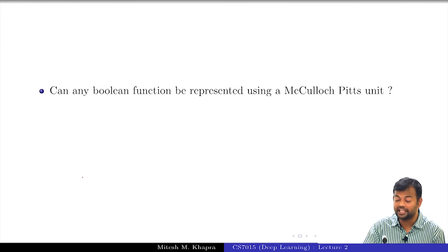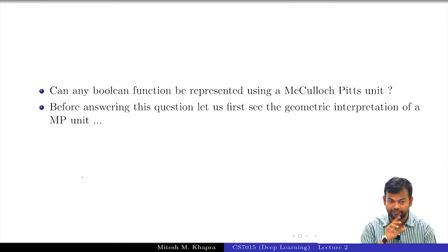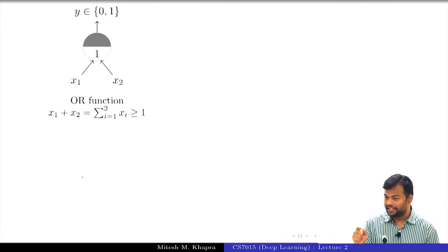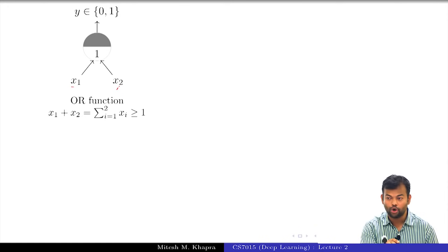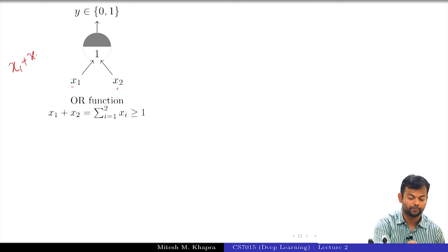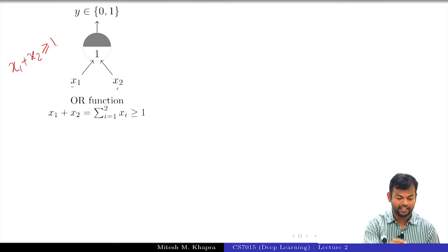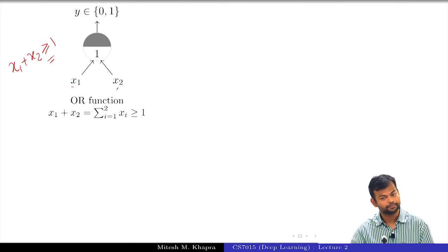Before answering whether any Boolean function can be represented using an MP neuron, let us look at a geometric interpretation of what the MP neuron is actually doing. Take the OR function with two inputs X1 and X2: the neuron fires if X1 plus X2 is greater than or equal to 1. Now, the equation X1 plus X2 equal to 1 is the equation of a line. Since we are dealing with Boolean inputs on two axes, we can only have four input points: (0,0), (0,1), (1,0), (1,1).